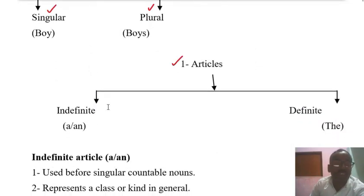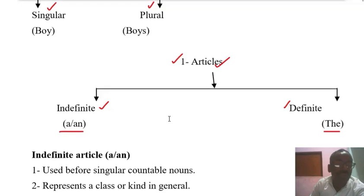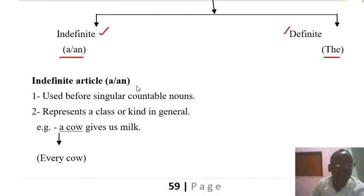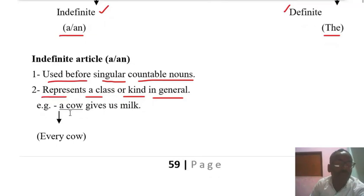Articles — there are two types: Indefinite and Definite. A and An are the Indefinite Articles, whereas The is the Definite Article. Indefinite articles A and An are used before singular countable nouns and represent a class or kind in general. For example, 'A cow gives us milk' — here 'a cow' means every cow.